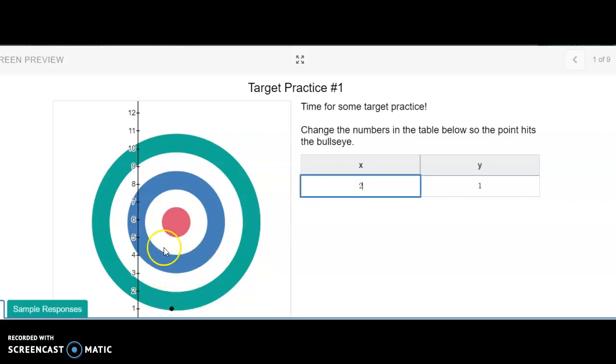So now I've used two. What y value do I need to get right here? You probably said out loud six. Awesome, that is correct. So after I've done that, I see that the black dot has moved inside the bullseye, and that is correct.